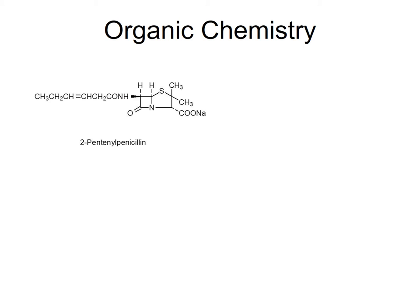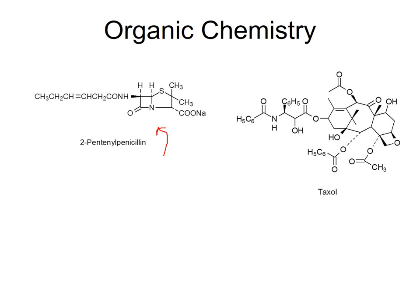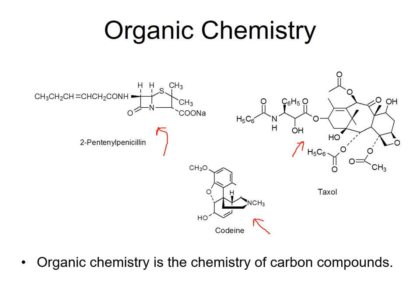Okay, so we're doing organic chemistry, and in organic chemistry we're actually looking at some molecules that you probably have seen before. Here is pentopenicillin, and you all know penicillin. Here is Taxol, so Taxol is an anti-cancer breast cancer pharmaceutical. And here's codeine, which is an analgesic, a pain-relieving compound.